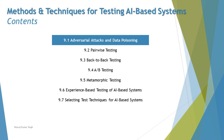The chapter covers 9.2 pairwise testing, 9.3 back-to-back testing, 9.4 A/B testing, 9.5 metamorphic testing, 9.6 experience-based testing for AI-based systems, and 9.7 selecting test techniques for AI-based systems. As part of today's tutorial, we are getting started with adversarial attacks and data poisoning.